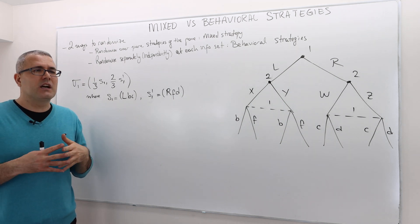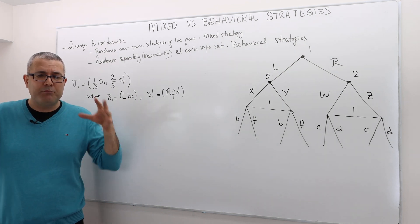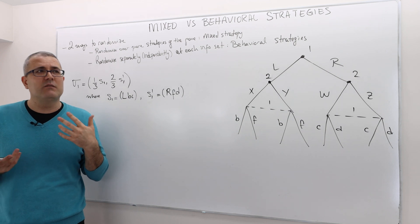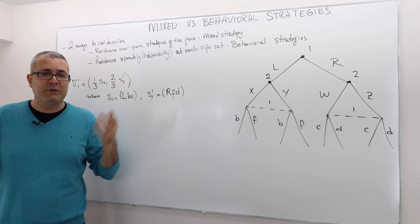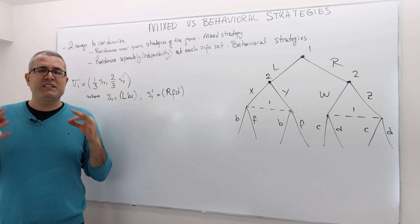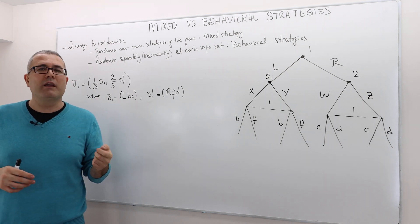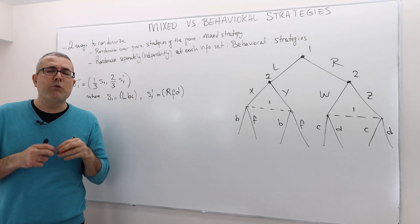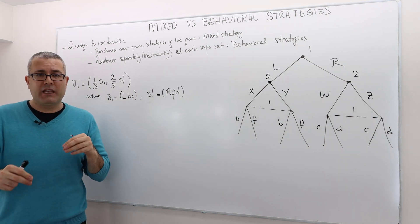This mixed strategy does not tell us what is the likelihood that player 1 is going to play left or right at the beginning of the game. It also doesn't tell us what player 1 is going to play when the game arrives at a particular point — what is the probability he plays B, or the probability he plays C? So these pure strategies do not give us this information directly. Mixed strategies are somewhat like players thinking about their pure strategies before the game starts — they just randomize. They say, 'I don't really know whether I should play this or that, so I'll flip a coin.' They just pick some mixed strategy and randomize.